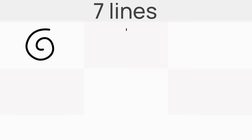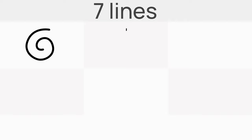These lines are: the spiral, the circle, the half circle, the S or curve of beauty, the wavy line, the broken line or zigzag, and the straight line.